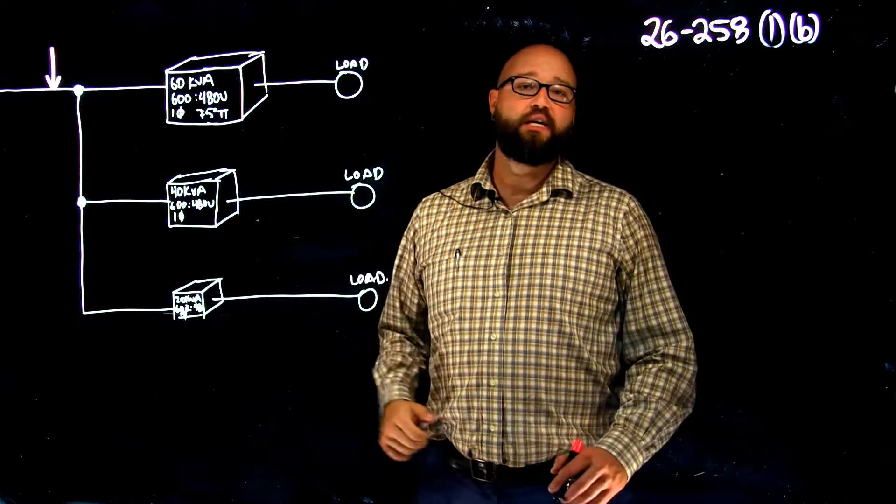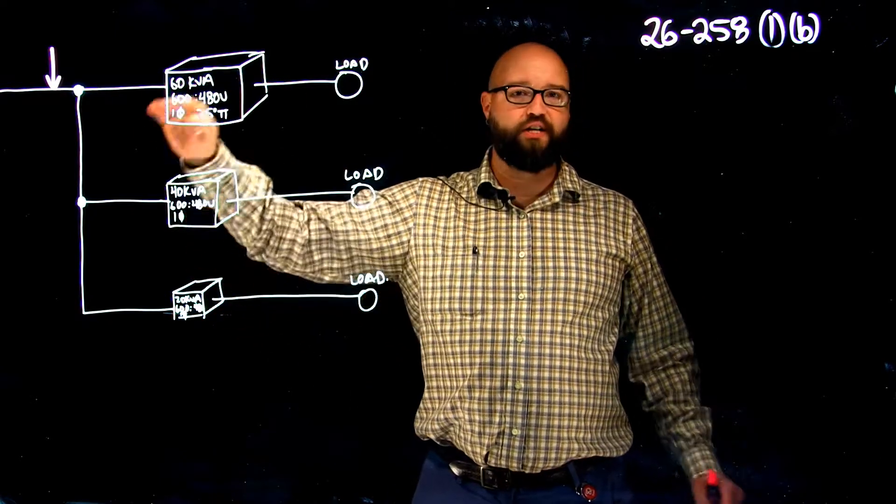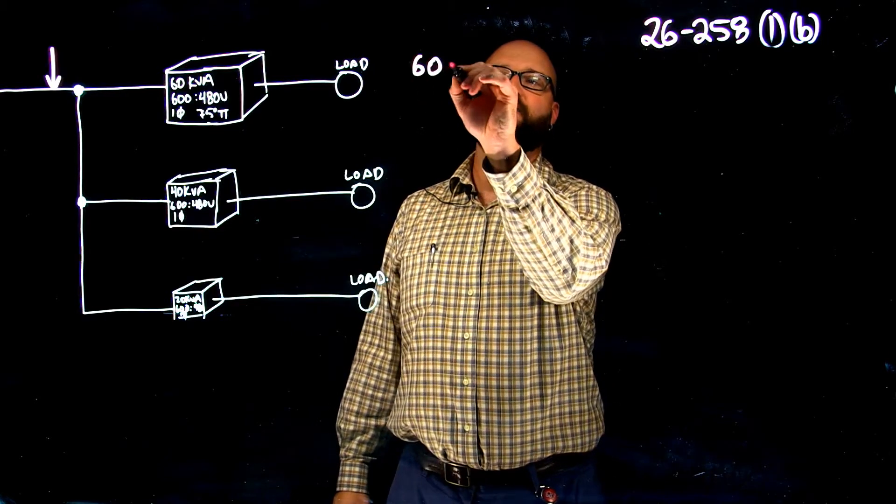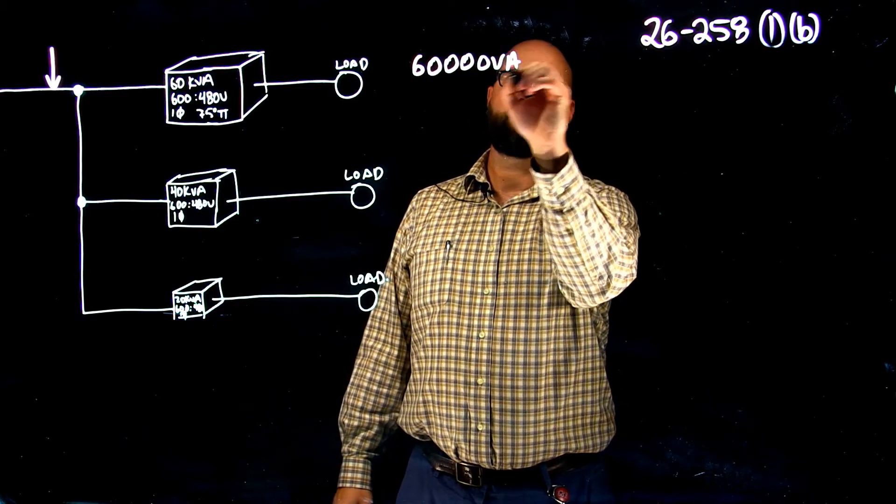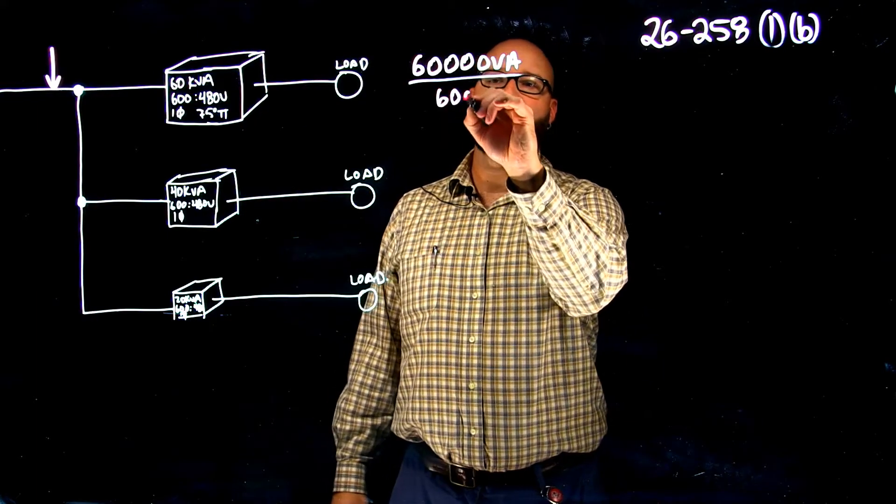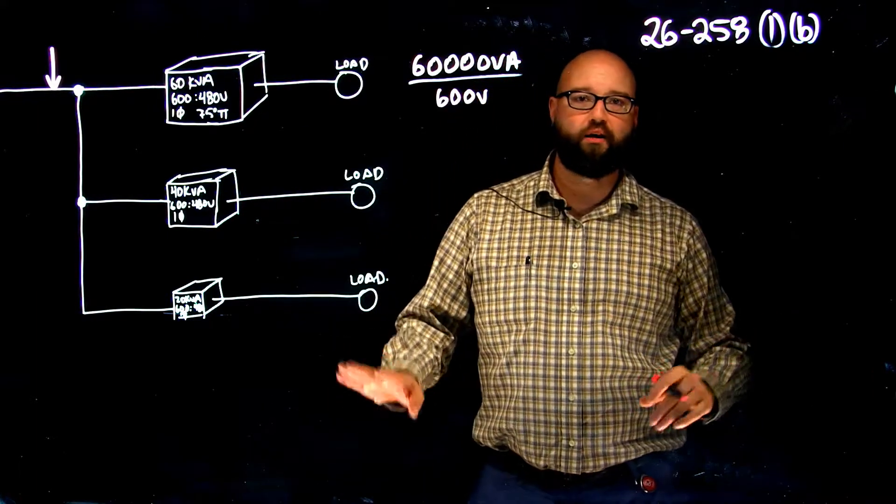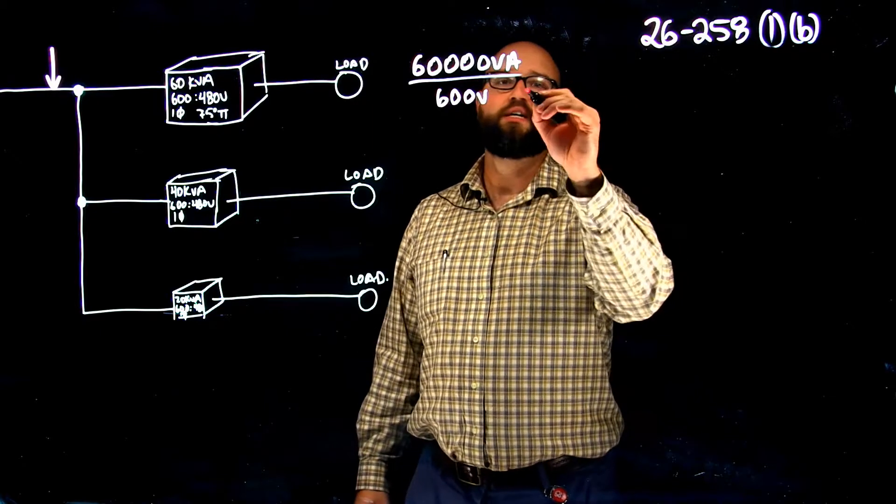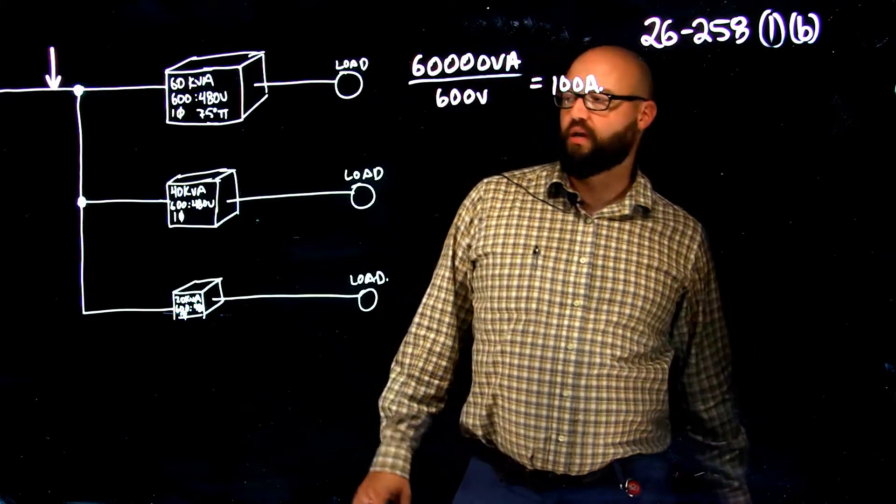First thing we need to figure out is what is the rated primary of each one of these transformers. So, we'll start with our 60 kVA divided by our primary voltage of 600 volts. No root 3 calculation here. As I said, single phase. This gives us 100 amps.